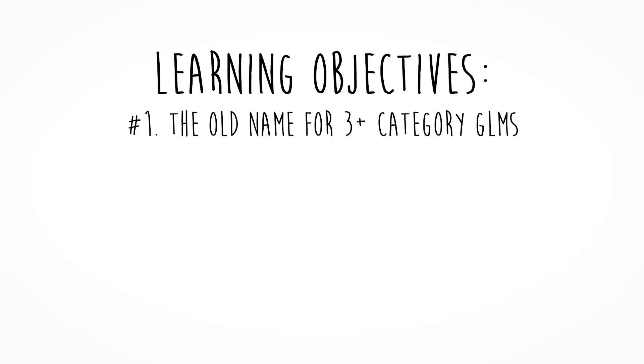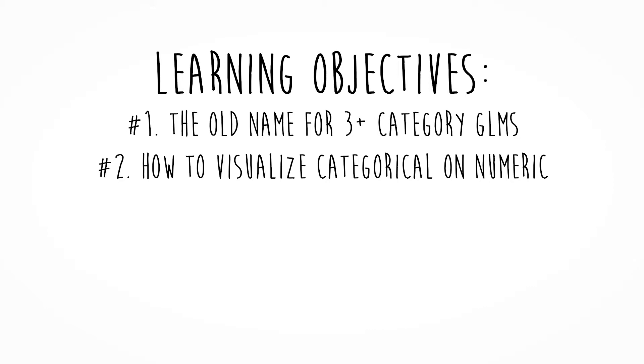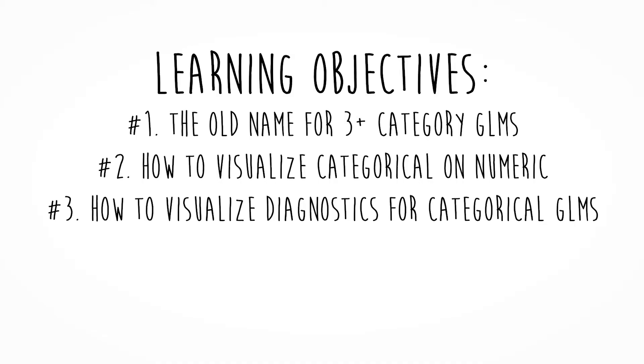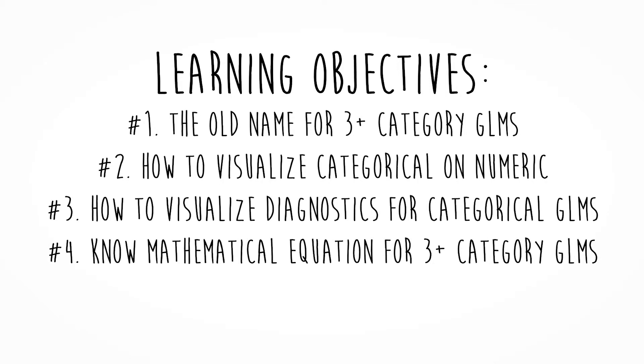Let's review the learning objectives. Number one: know the old name for three or more category GLMs — ANOVA. Number two: know how to visualize categorical on numeric — a median dot plot. Number three: know how to assess the diagnostics — you've had this objective four times now. Number four: know the mathematical equation, which adds a second binary predictor variable indicating membership in a second group. Finally, know what each estimate represents: the intercept is the mean of the referent group, the two slopes are differences between that referent group and the other groups, and Cohen's d. Next time we'll be talking about multivariate general linear models.